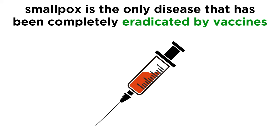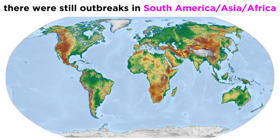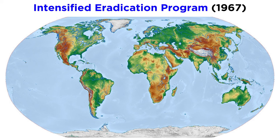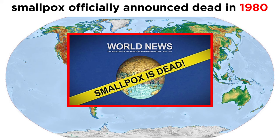Even better news is that smallpox is the only human disease to have been completely eradicated by vaccination. It all started in 1959, when the World Health Organization hatched a plan to eliminate smallpox. Due to a shortage of funds and support, smallpox remained widespread and caused regular outbreaks across South America, Asia, and Africa by 1966. The intensified eradication program began in 1967 and made steady progress, eliminating the virus in North America and Europe. The last case of naturally acquired smallpox infection was reported in 1977, and the eradication of the disease was officially acknowledged in 1980.